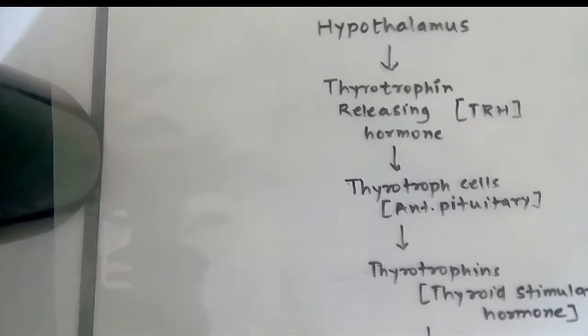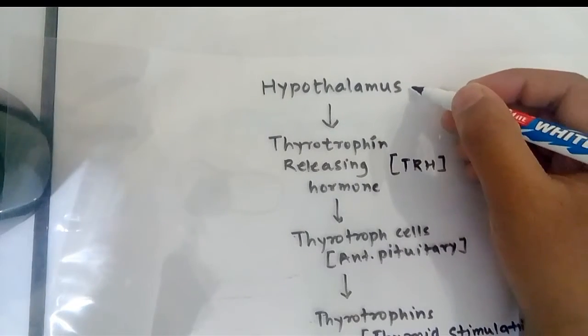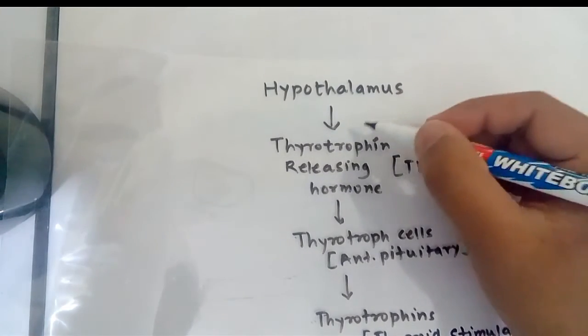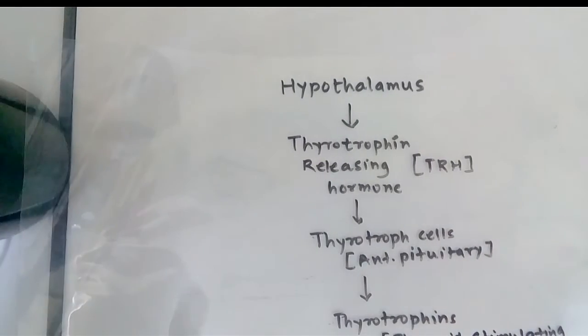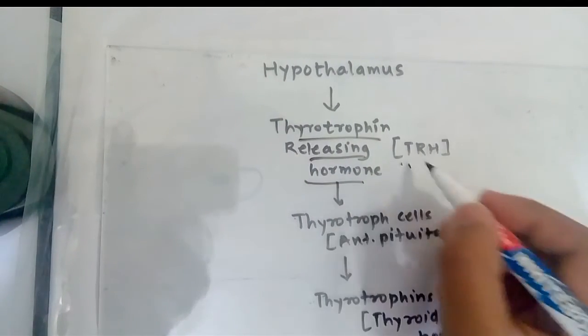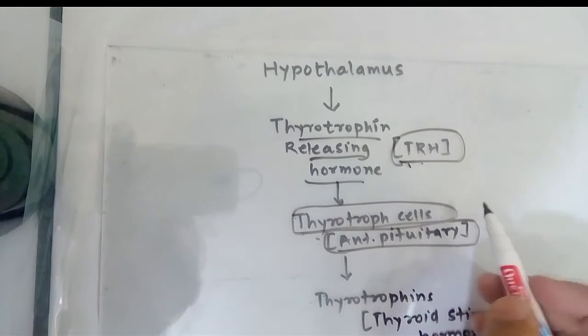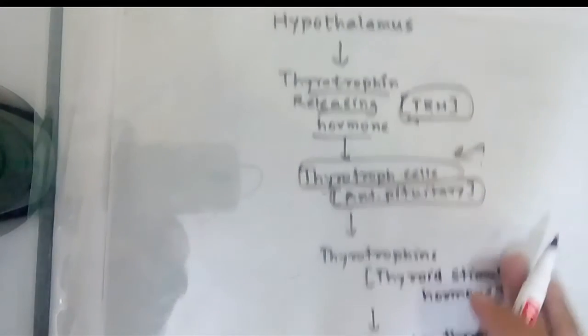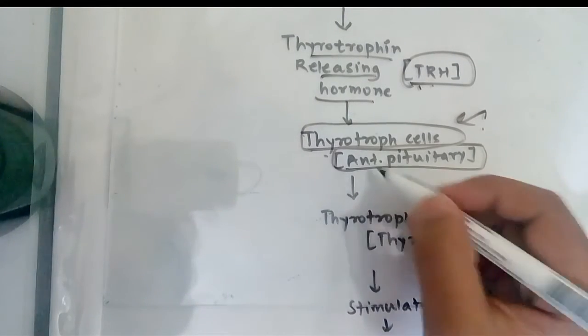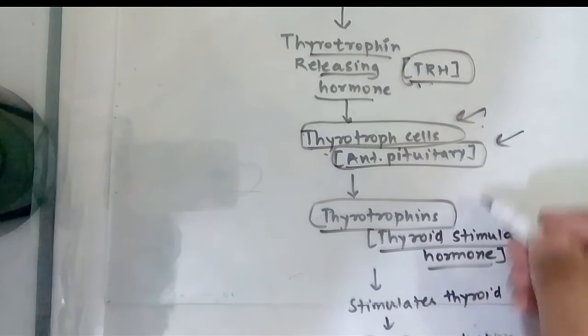Now let us see how this process activates. In the brain there is the hypothalamus which secretes thyrotropin-releasing hormone, TRH. This TRH goes to the anterior pituitary and acts on thyrotropin cells. The anterior pituitary secretes thyrotropins, which are the main thyroid-stimulating hormone, TSH.